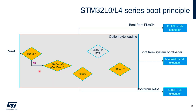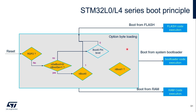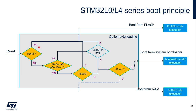Here is the boot principle of the L0 and L4 series. When RDP is not set to level 2, depending on the configuration of the boot pin selection, the next decision is made by either the boot0 pin or the boot0 configuration. Both could lead to booting from internal user flash, or could be further determined by the nBoot1 option bit to boot from either the system bootloader or SRAM. When RDP is set to level 2, the system will always boot from internal user flash only.